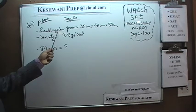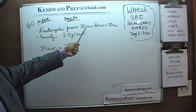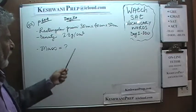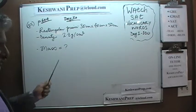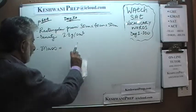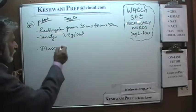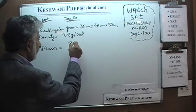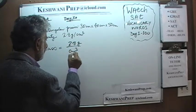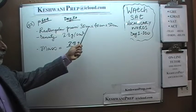In number 15, we are given a rectangular prism whose dimensions are 30 cm, 40 cm, and 50 cm. We are given the density. The question is: what is the mass of this prism? Mass is simply going to be the density times the volume. Density is 2.8 grams per cubic centimeter, and the cubic centimeter unit will cancel out.